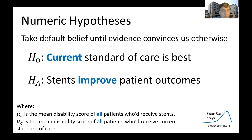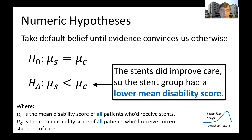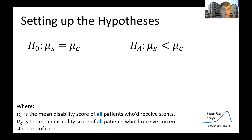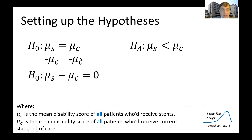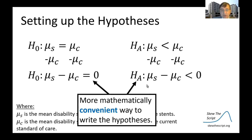Numerically, we are looking at the hypotheses regarding the population means in outcomes between these groups. The null hypothesis states that stents don't improve outcomes — the population means on the disability score are the same in both groups. The alternative hypothesis states that the population means for stent-treated patients' disability score will be lower than for control patients. We subtract the control from both sides: under the null, this yields zero; under the alternative, the lower stent group minus higher control gives a value less than zero.